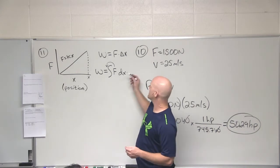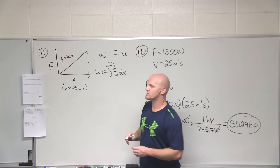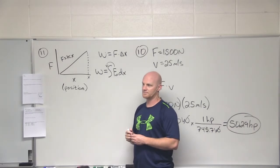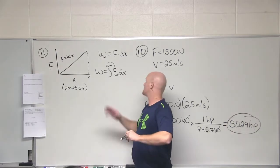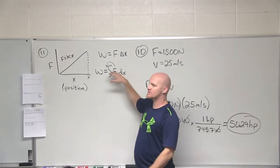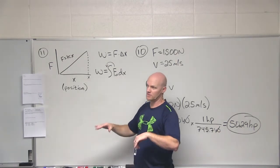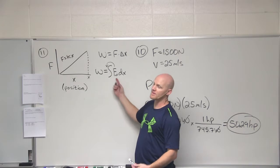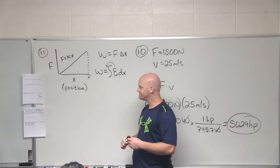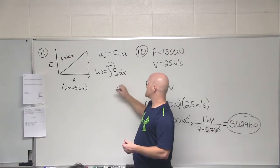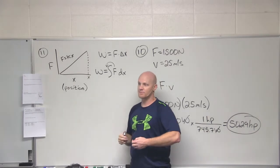So in this case — if F is not in the same direction as the displacement, you've got a cosine theta factor in there as well. The question you're going to get is either going to have the force in the same direction as displacement or not, and they'll let you know. If it's not, include the cosine theta. If it is, leave it out because cosine of zero is one. I'm going to give you a situation where the force and the displacement are in the same direction.